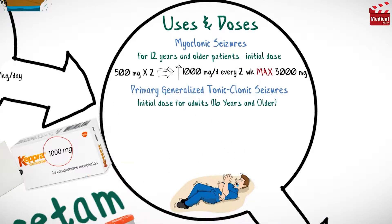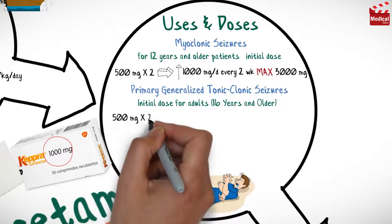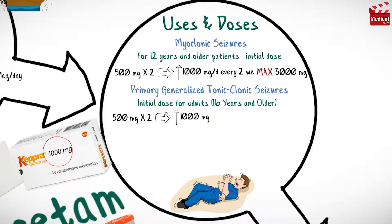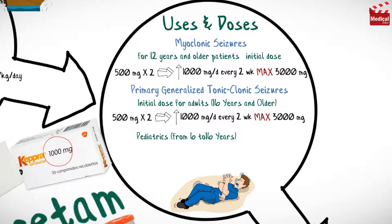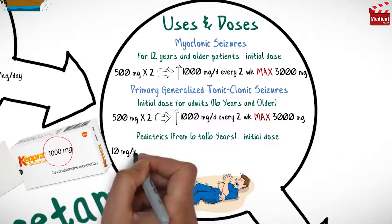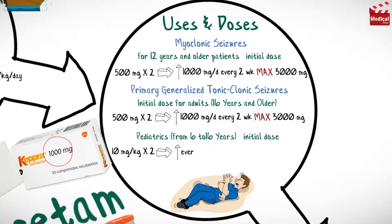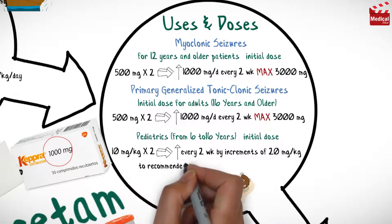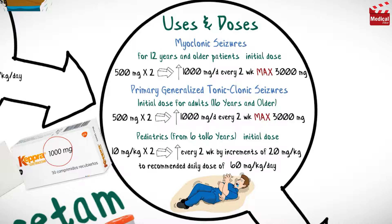It is also used for primary generalized tonic-clonic seizures. The usual initial dose for adults 16 years and older is 500 milligrams twice daily, increased by 1000 milligrams per day every two weeks to 3000 milligrams per day. For pediatric patients from 6 to 16 years, the initial dose is 10 milligrams per kilogram twice daily, increased every two weeks by 20 milligrams per kilogram to a recommended dose of 60 milligrams per kilogram per day.